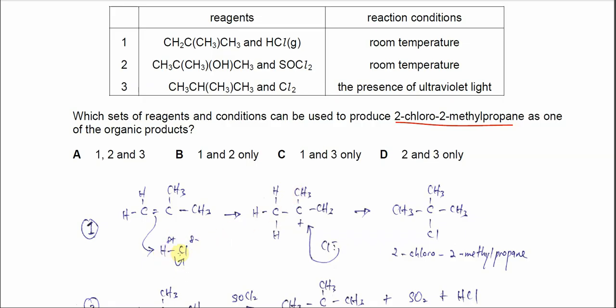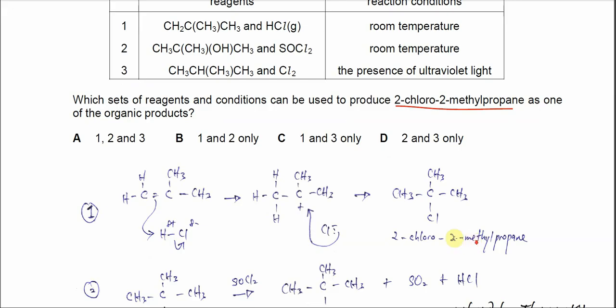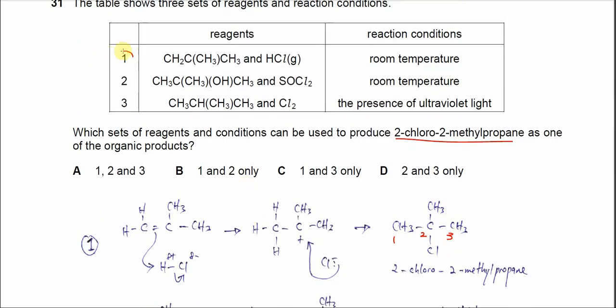Because HCl won't break, the two electrons move to the chlorine and form Cl-. The chloride ion will attack the carbocation and produce this product. So it's 2-chloro-2-methylpropane: first carbon, second carbon, the chlorine. So the first set can be used to form 2-chloro-2-methylpropane.